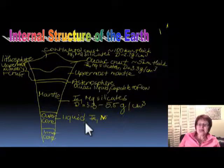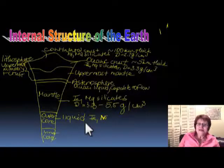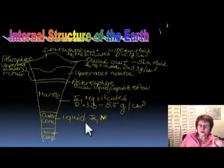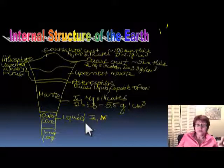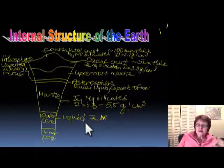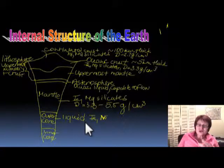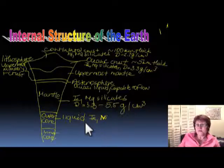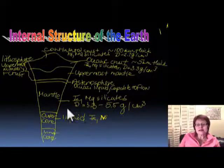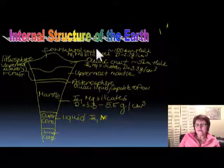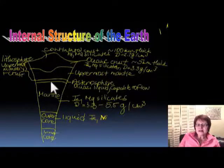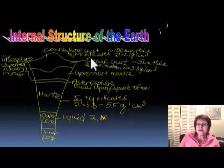The outer core is liquid — we know that — and the composition of the outer core is also iron and nickel. The fact that it's liquid and turning around with the solid core inside of it generates Earth's magnetic field, which is very important to know. Make sure you know the asthenosphere, and that above the asthenosphere we have the lithosphere plate, which includes the uppermost mantle and the crust.